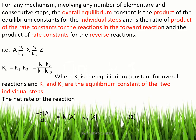K1 is the rate constant for the forward reaction A → X, and K2 is the rate constant for the forward reaction X → Z. K-1 is the rate constant for the backward reaction A ← X, and K-2 is the rate constant for the backward reaction X ← Z. The equilibrium constant Kc equals K1·K2 divided by K-1·K-2. According to this principle, Kc is the ratio of rate constants of forward reactions to that of backward reactions.